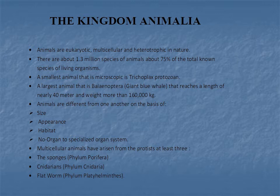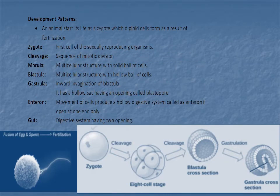Animals differ from one another on the basis of size, appearance, habitat, and from no organ to specialized organ systems. Multicellular animals have arisen from the Protista. At least three phyla arose from Protista: sponges — phylum Porifera — cnidarians — phylum Cnidaria — and flatworms — phylum Platyhelminthes.